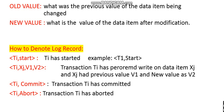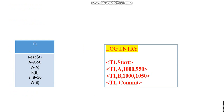How to denote log records: Ti comma start means Ti has started — for example, T1 comma start. Ti comma Xj comma V1 comma V2 means transaction Ti performed a write on data item Xj, where Xj had previous value V1 and new value V2. Ti comma commit means transaction Ti has committed. Ti comma abort means transaction Ti has aborted. In the example, transaction T1 performs read on data item A, updates A = A - 50, writes A, reads B, updates B = B + 50, and writes B.